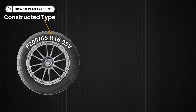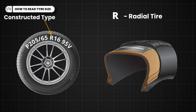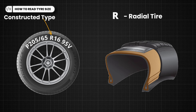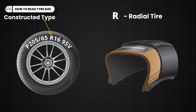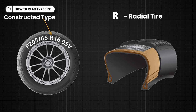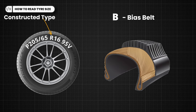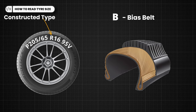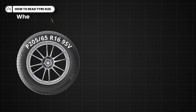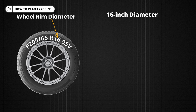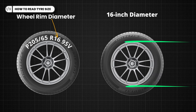The letter R depicts the variety of tire — this refers to the tire being a radial type, which is the majority of tires used today. Alternative letters indicate other types of tires constructed differently; for example, B for bias belt. The number 16 is the wheel rim diameter stated in inches, meaning this tire will fit over a rim that is 16 inches.